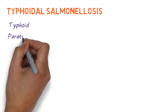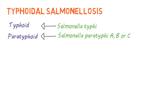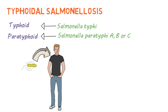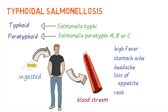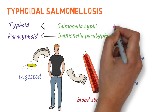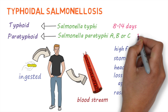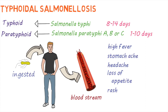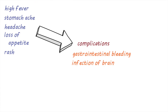Typhoid fever and paratyphoid fever are caused by either Salmonella typhi or Salmonella paratyphi A, B, or C. When these bacteria are ingested, they can enter the bloodstream leading to symptoms like high fever, stomach aches, headaches, loss of appetite, or a rash. These symptoms usually occur 8 to 14 days after exposure in typhoid fever, and 1 to 10 days after exposure for paratyphoid fever. In some cases, it can lead to serious complications like bleeding from the intestinal tract or infection of the brain. The elderly and those with weakened immune systems are at higher risk.